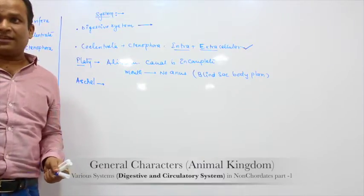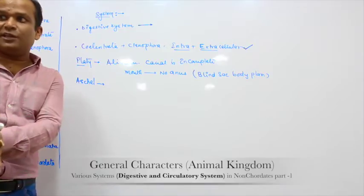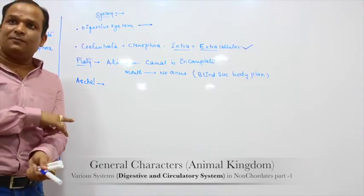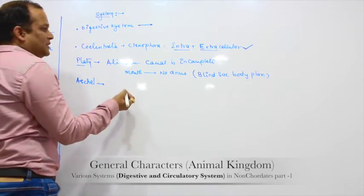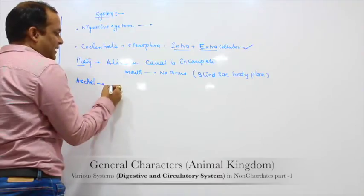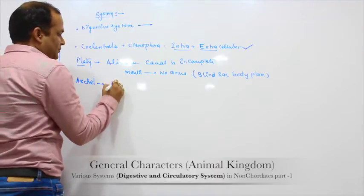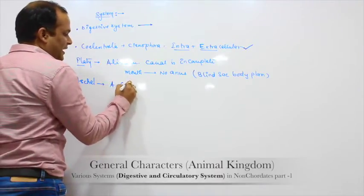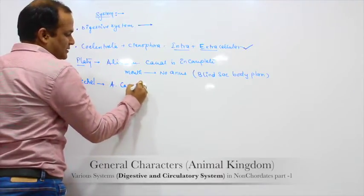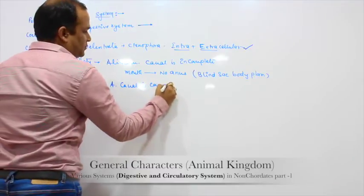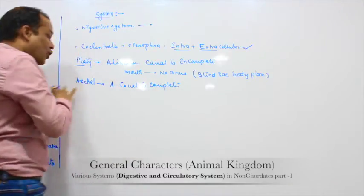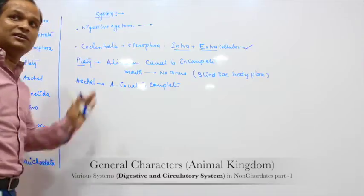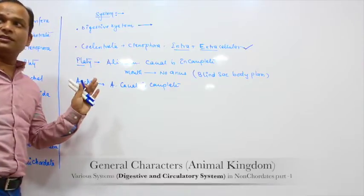So the generalized term for Platyhelminthes remains blind sac — tapeworm is an exceptional case. In case of Aschelminthes and onwards, the alimentary canal is complete — meaning both mouth as well as anus are present from Aschelminthes onwards.